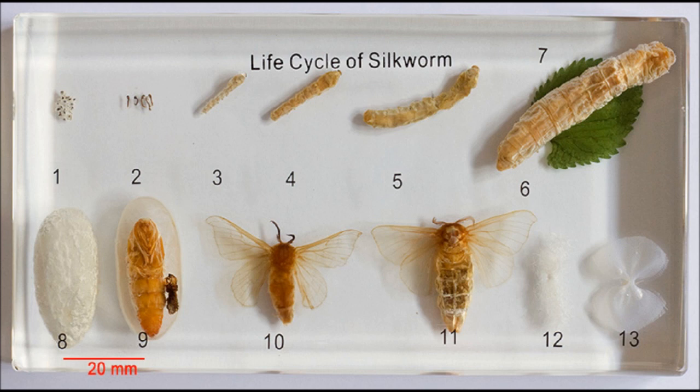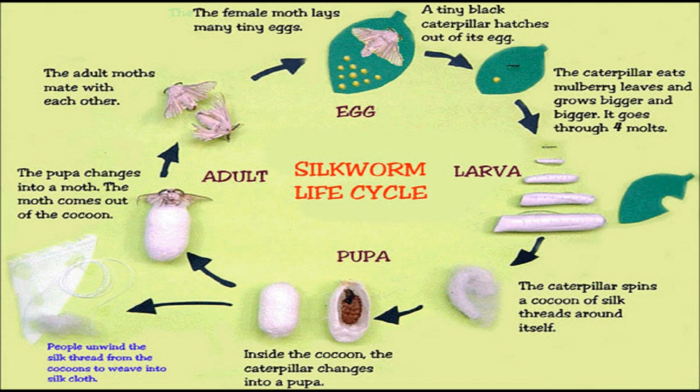Life cycle of silk moth: Silk moth is a large white insect. The different stages in its life cycle are as follows. The egg is the first stage. The female moth lays its eggs during the summer, and the eggs hatch in spring. The eggs hatch into larvae or caterpillars which feed on tender mulberry leaves. This stage lasts for about 27 days, during which the larvae shed their skin 4 times. The process of shedding the skin is known as molting.